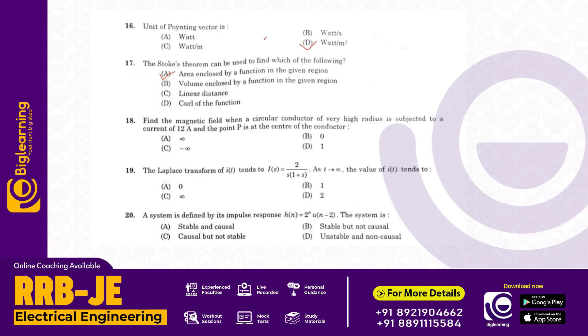Find the magnetic field when a circular current of very high radius is subjected to a current of 12 ampere and point B is at the center of the conductor. The answer is zero. Answer B.